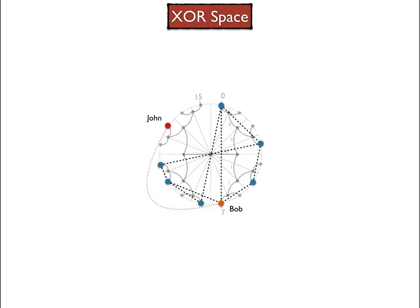The first thing John does is send a message to the network to find its closest node. He does this by performing a find closest node with its own address, 13. The message is sent first to Bob, which will relay it on behalf of John. Bob will look into its own neighbors to find which one is closest to John's address, and then it sends it to that neighbor.